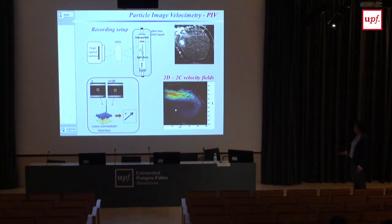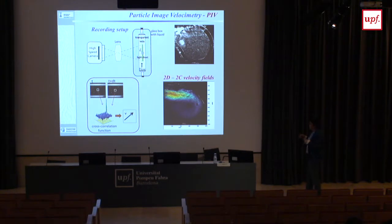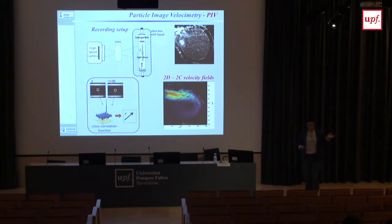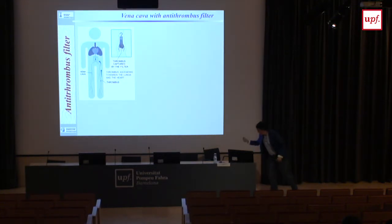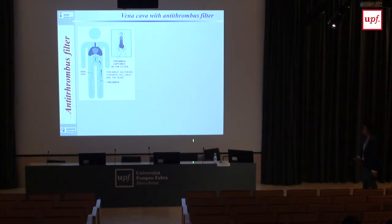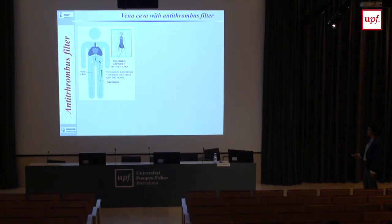Because stereo PIV is more difficult in liquids due to imaging through a liquid, we have proposed a technique that measures the third component with the same setup without looking from two different directions. Now for a vascular flow example: the vena cava filter. All we did in this application was normal PIV. This is a human body diagram showing where they place the anti-thrombus filter — the thrombus is typically formed in the legs, travels upward, and can reach the heart.